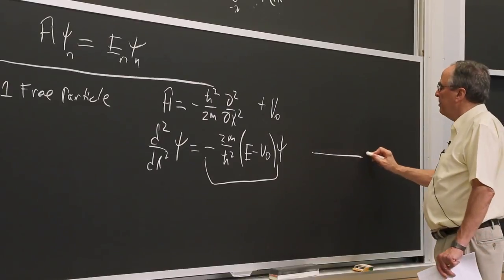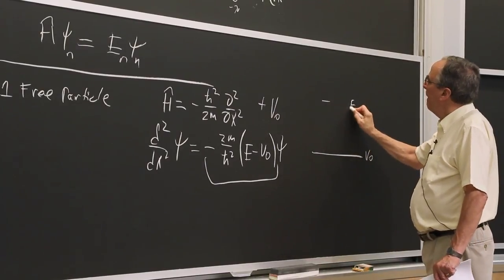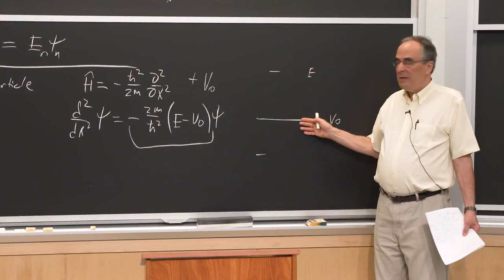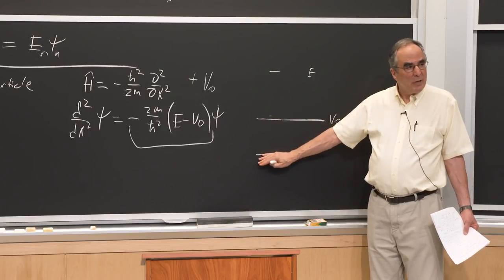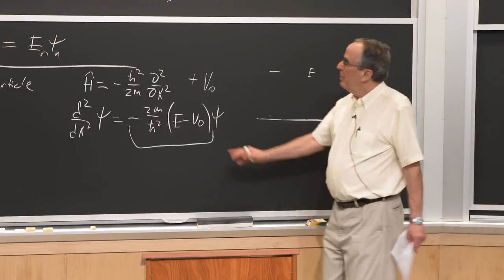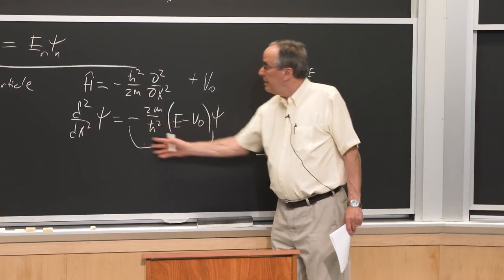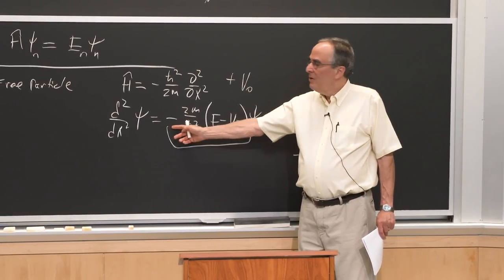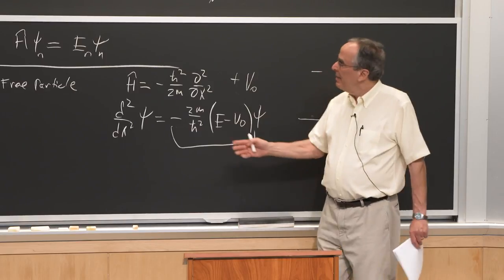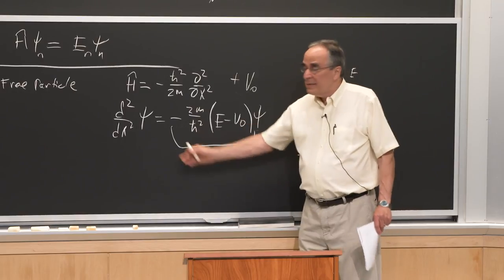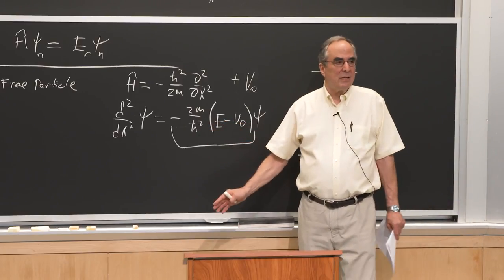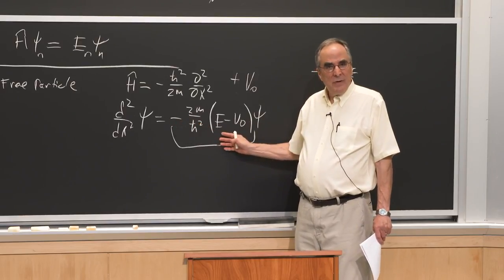If the energy E is above the potential V₀, the particle can be there classically — this is the classically allowed situation, and the constant is negative, giving oscillatory solutions. If the energy is below V₀, that's classically forbidden. When this constant is negative, you get oscillation; when positive, you get exponential behavior.